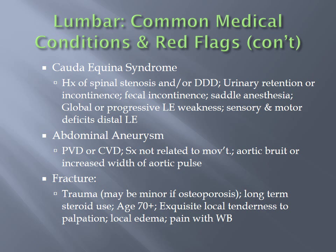Red flags associated with abdominal aneurysm include a history of peripheral vascular disease (PVD) or cardiovascular disease. Patients with an abdominal aneurysm will have low back pain that is not necessarily related to movement — it may be constant or not associated with any particular movement pattern. In other courses you will learn to assess the abdomen for an aortic bruit or increased width of the aortic pulse using manual exam as well as a sphygmomanometer.